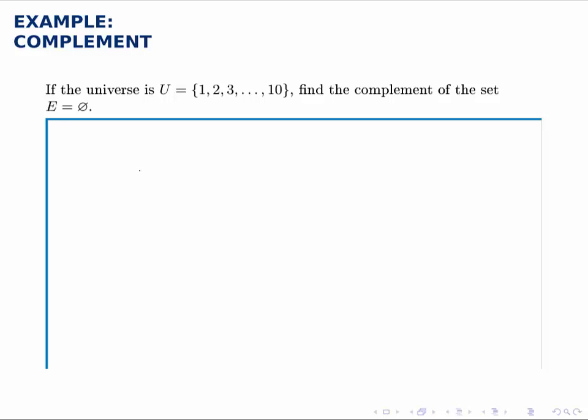So if we have the empty set that contains no elements, and we look for its complement, we're going to get all the elements in the universe except for none, because there are no elements in the empty set.